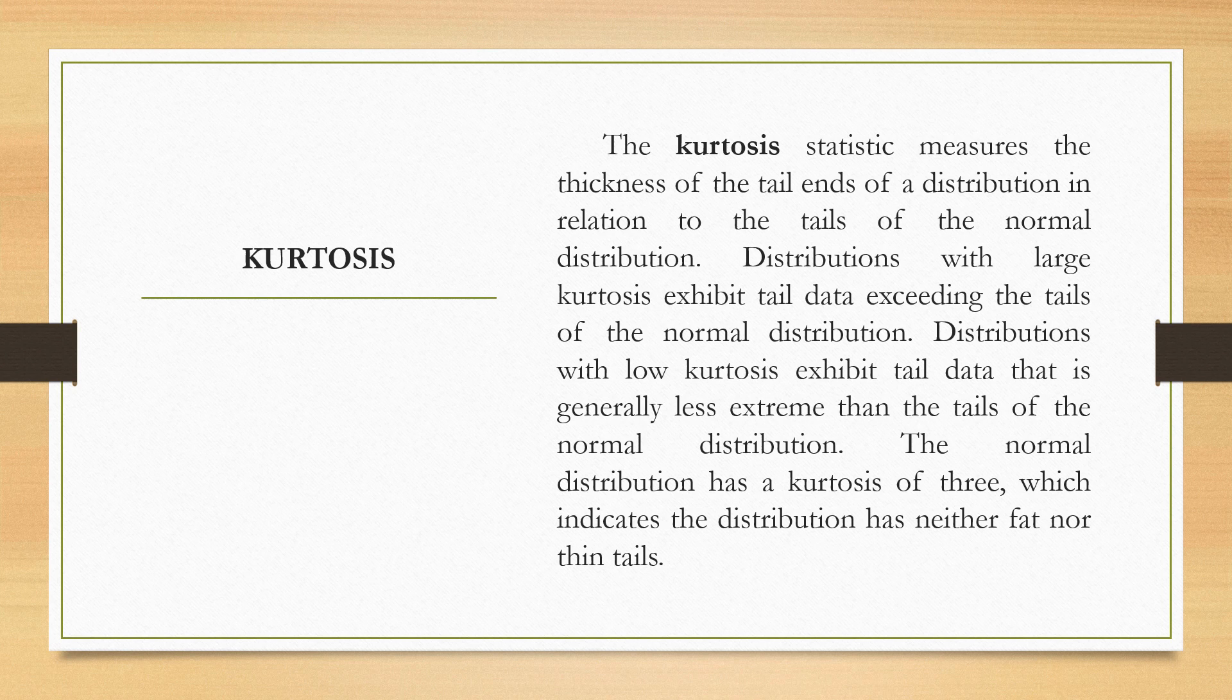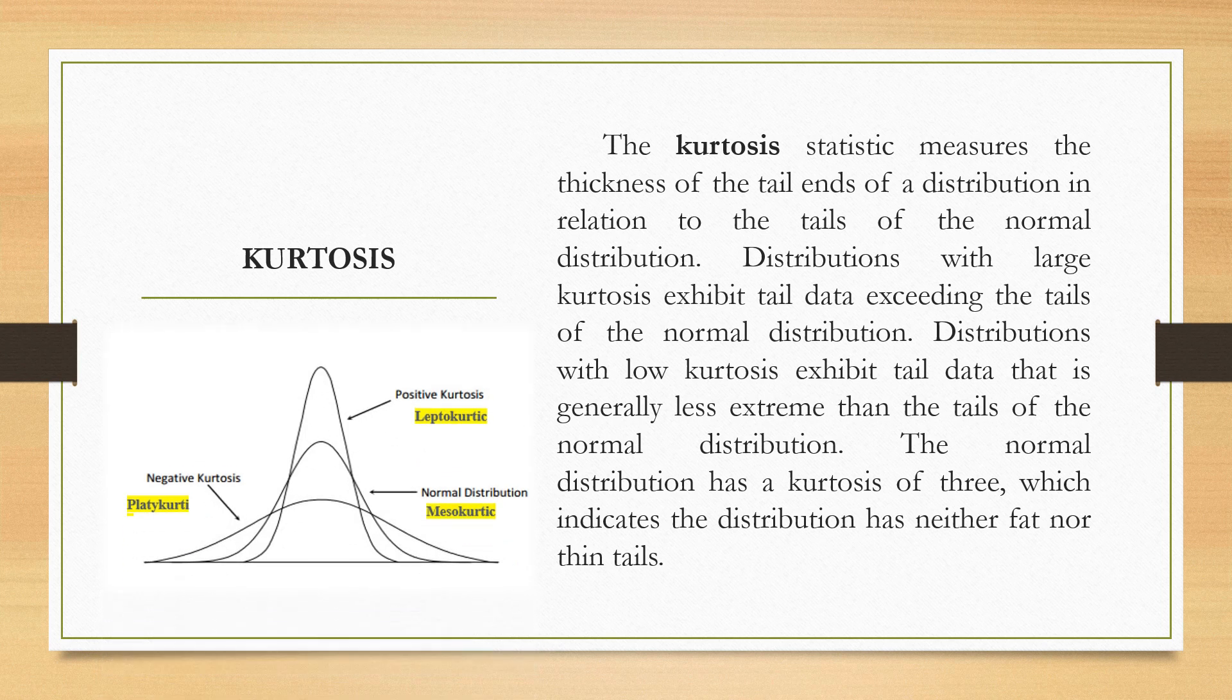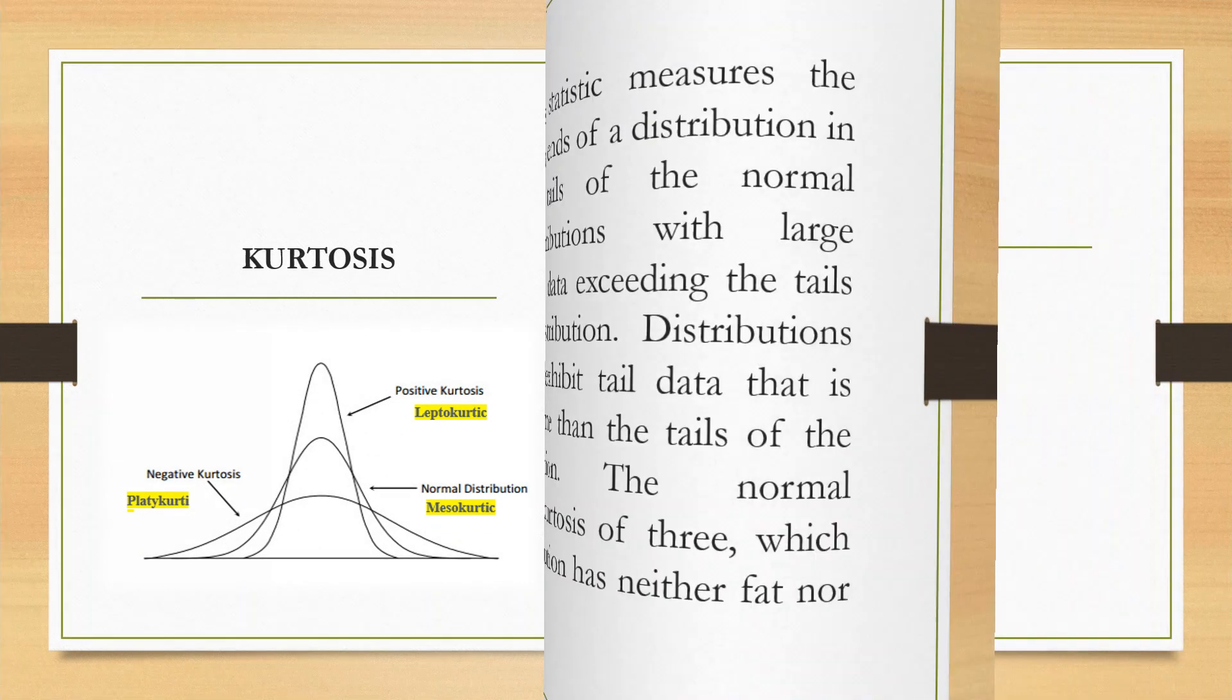Distributions with low kurtosis exhibit tail data that is generally less extreme than the tails of the normal distribution. The normal distribution has a kurtosis of 3, which indicates the distribution has neither fat nor thin tails. Therefore, if an observed distribution has a kurtosis greater than 3, the distribution is said to have heavy tails when compared to the normal distribution. If the distribution has a kurtosis of less than 3, it is said to have thin tails when compared to the normal distribution.